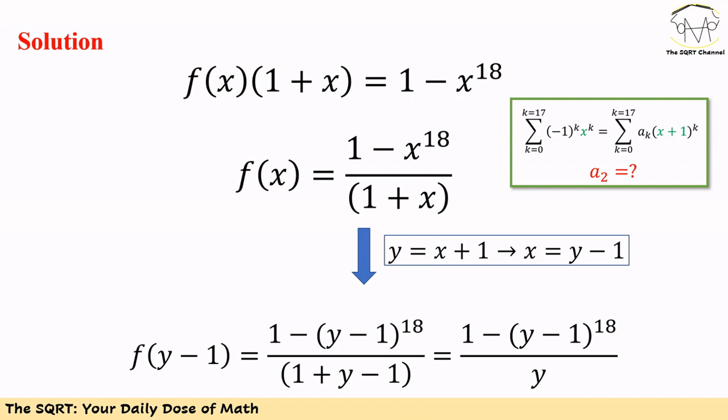Now let's use y for x plus 1. Then x is going to be y minus 1, and let's replace x with y minus 1. Then we are going to have 1 minus y minus 1 to the power of 18 for the numerator, and 1 plus y minus 1 for the denominator. We can remove 1 in the denominator and then we just have y.